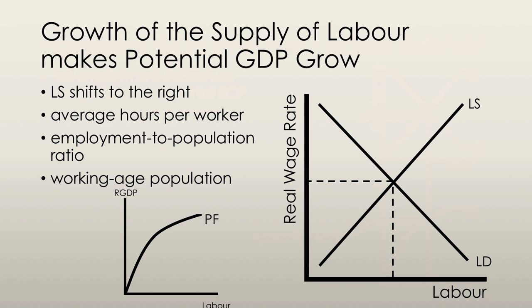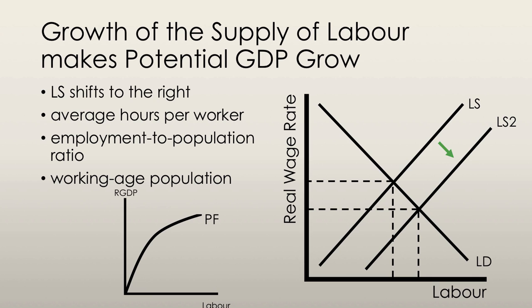Growth of the labor supply actually makes potential GDP grow. A shift to the right in the labor supply curve increases the labor quantity at any given real wage rate. The quantity of labor can change as a result of an increase in the average number of hours worked per worker, an increase in the employment-to-population ratio, or an increase in the working-age population. Population growth increases the supply of labor but demand remains unchanged — there's no change in the production function itself, just a movement along it. The real wage rate falls and the equilibrium quantity of labor increases, giving us a greater amount of labor working.